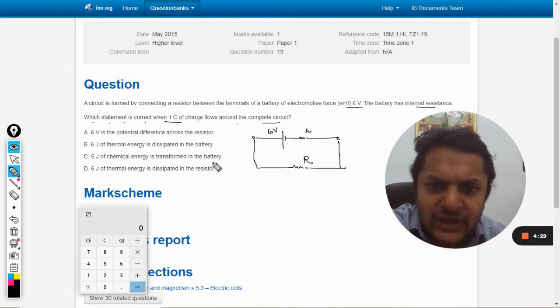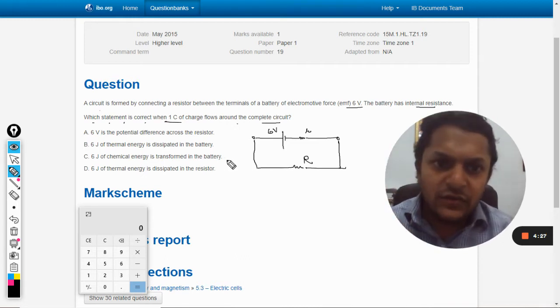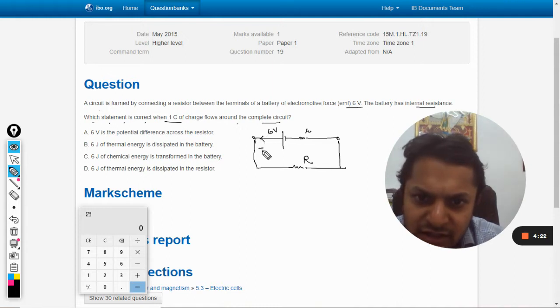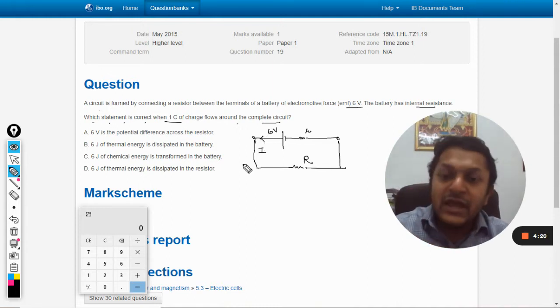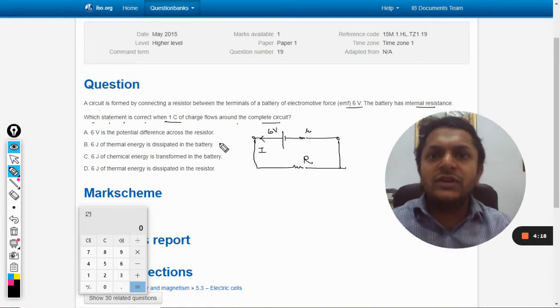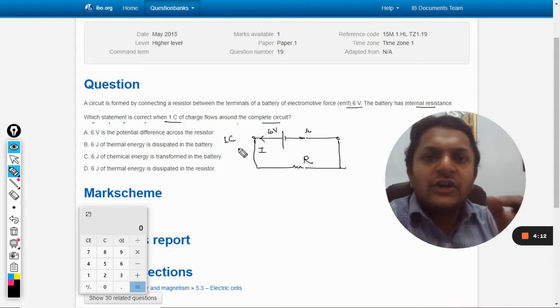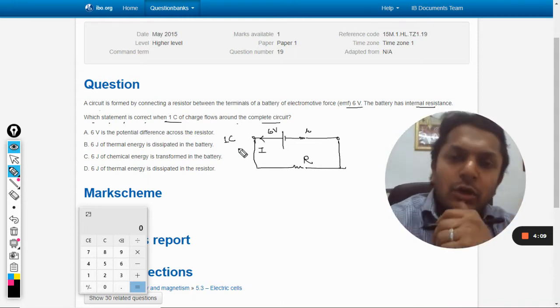Only one value that is given to us is six volt. We don't know the internal resistance, we don't know the external resistance, but we know that the current is flowing. But the current is not given, the charge is given: one coulomb. So only one coulomb of the charge flows in the circuit. Now this is a problem.